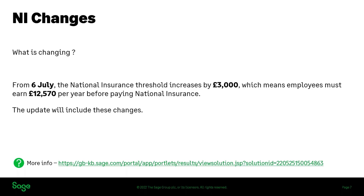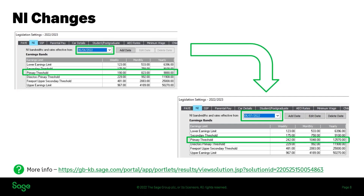To highlight these changes: in the legislation settings screenshot with the date set as 6th April, you can see the primary threshold at the original rate. When the date is changed to 6th July — when the new rates come into effect — the primary threshold updates to £12,570 on the annual column. When your process date is set as 6th July or after, the program will automatically start using the new thresholds. Absolutely nothing different for you to do — just install the update and you're good to go.